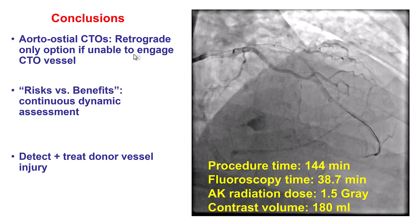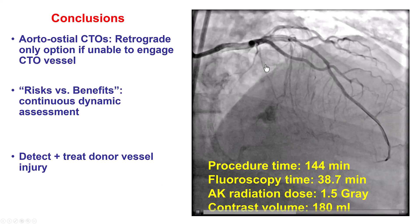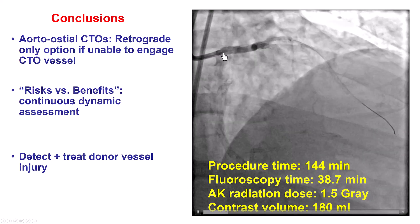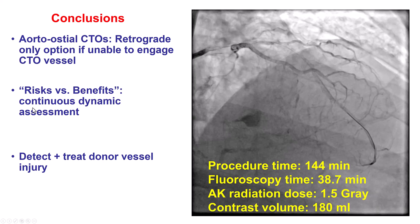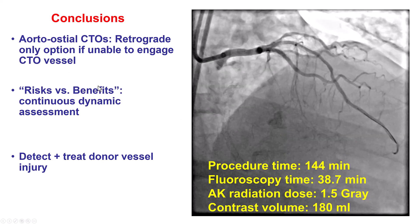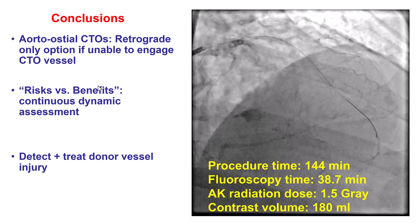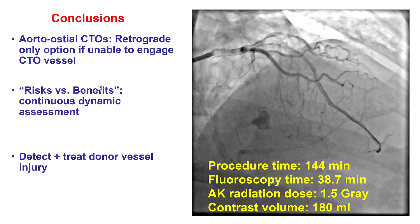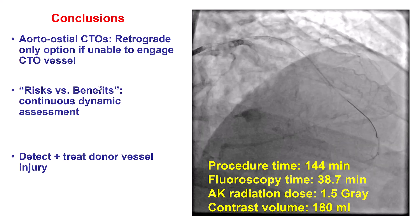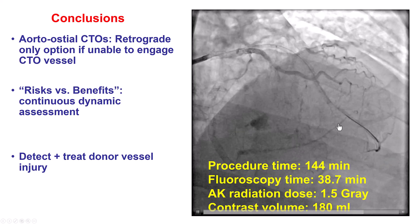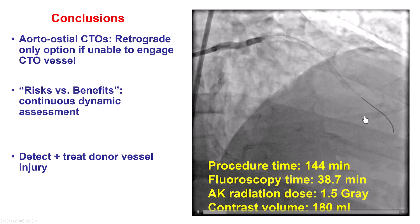Several lessons from this case. The first is that aorto-osteal CTO cases can be difficult to re-canalize, and if there is an inability to engage that vessel, the only way to re-canalize it is essentially by going retrograde. The second is that the risks and benefits of the procedure should be continually assessed. We tried retrograde through septals, which we thought had a favorable risk-benefit ratio, but that was unsuccessful. The only other option was to go retrograde through an epicardial collateral, but because this collateral was very complex, small, and highly tortuous, we did not think the risk involved would justify the potential benefit — and that's why we stopped.